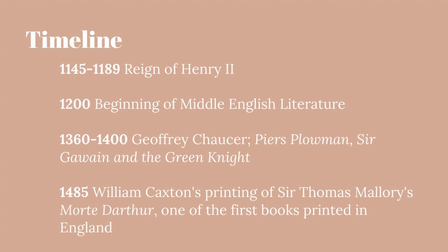Middle English is fairly readable — that's the Chaucer type of material you might have read in high school. From 1360 to 1400 you have Geoffrey Chaucer, Piers Plowman, and Sir Gawain and the Green Knight being published. By 1485, William Caxton had invented movable type and produced his first printing of Sir Thomas Malory's Morte d'Arthur, which becomes the official canon of the Arthur stories.